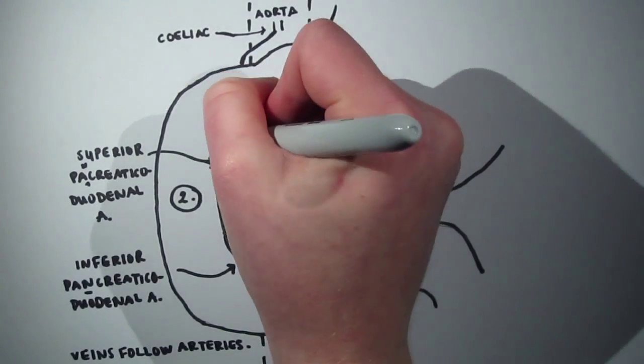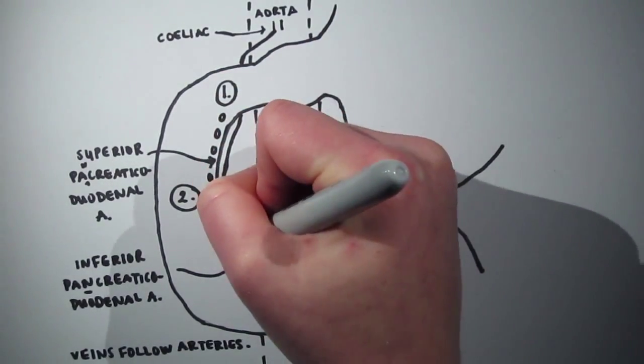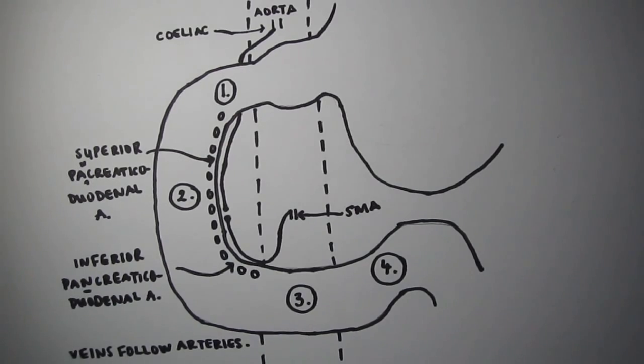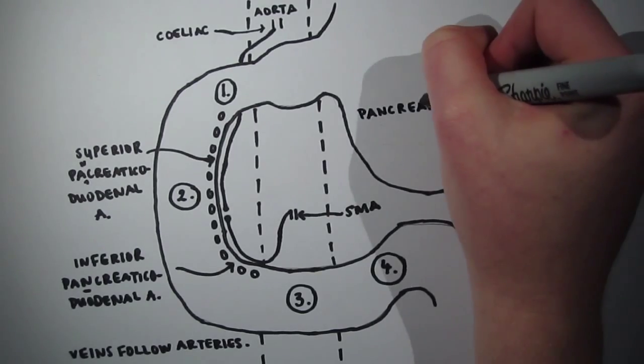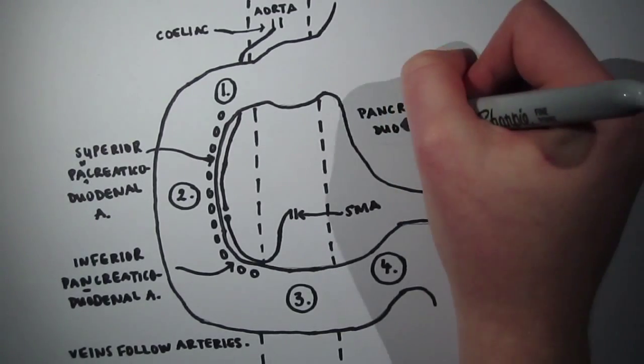The lymph nodes of the duodenum are called the pancreaticoduodenal lymph nodes. Like the stomach, the duodenum receives both parasympathetic and sympathetic innervation from the vagus and splanchnic nerves respectively.